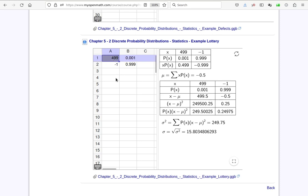But they're only $499 ahead. That means you have to subtract the dollar they've paid from the $500 that they win.